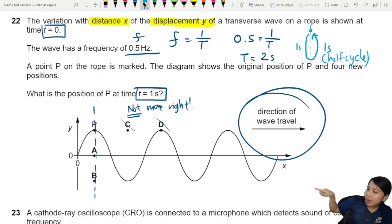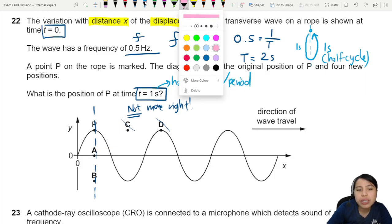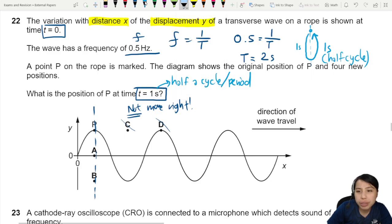So let's go back to the question. In one second, oh this is actually half a cycle or half a period. So means your particle is going to be going from the highest position all the way down to the lowest position and that's it. So lowest position is all the way down. We are going to be at B.